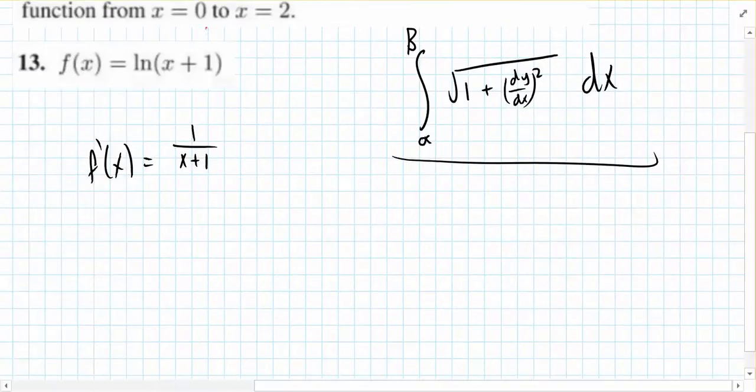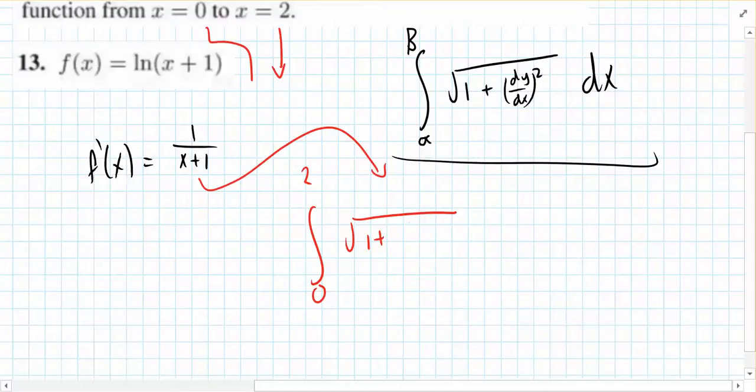So we'll use 0 and 2 as our limits, so the integral from 0 to 2 of the square root of 1 plus, and we'll bring this down, 1 over x plus 1 squared dx.